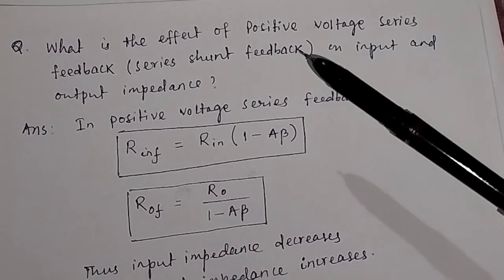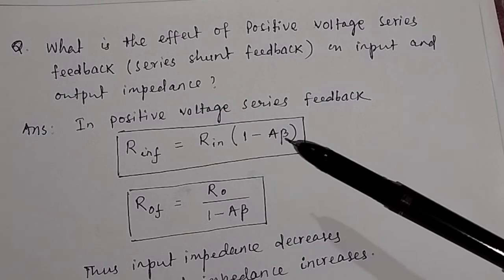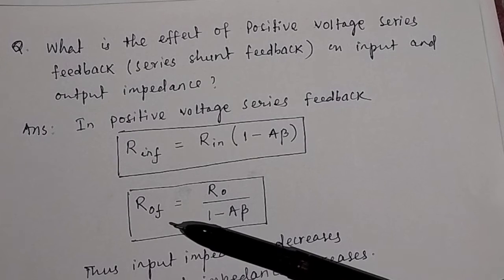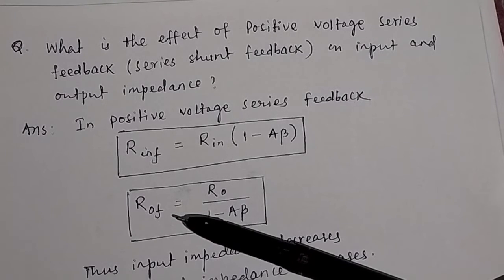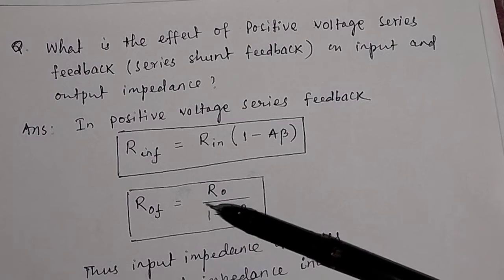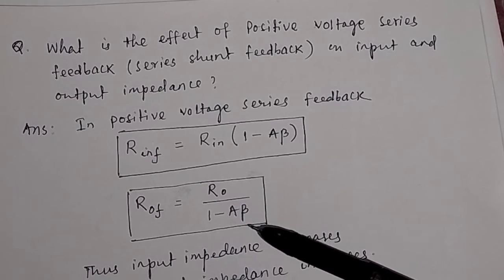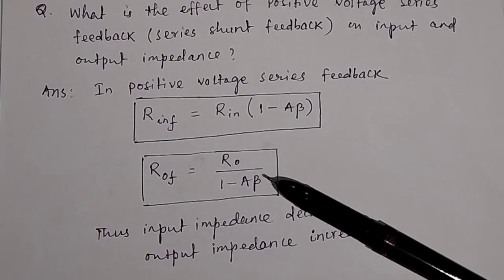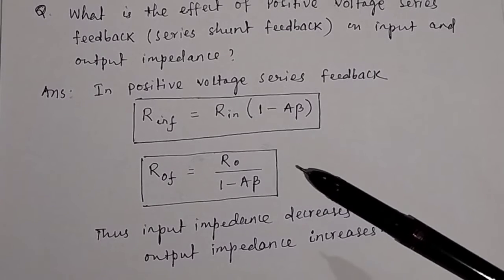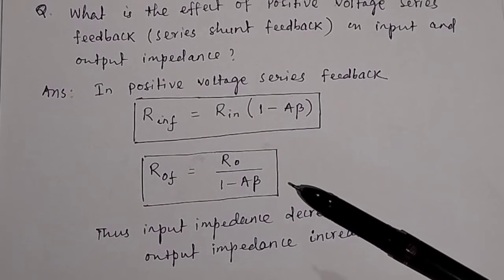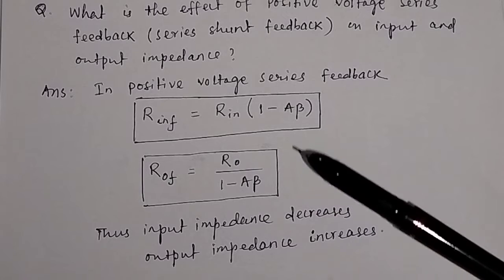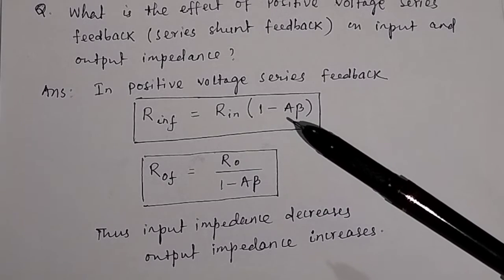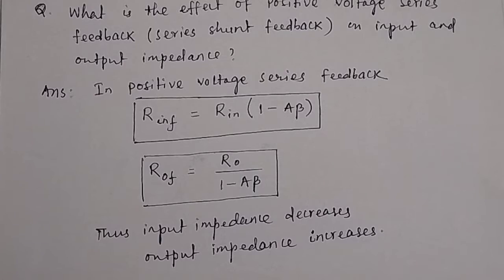In positive voltage series feedback, the input impedance decreases. And the output impedance with feedback — ROF — increases. So in positive voltage series feedback, the input impedance decreases and the output impedance increases, because the term (1 − Aβ) makes the denominator or multiplier less than one.